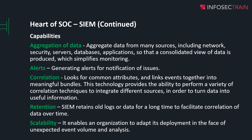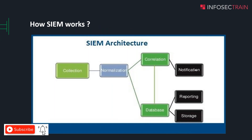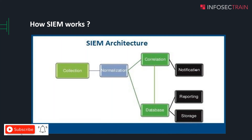Splunk cloud version is there, IBM cloud version is there, Azure Sentinel cloud version is there. Going ahead, this is the architecture: collection, normalization, correlation, database, notification, reporting, and storage. Collection — you get logs from multiple locations around the organization.